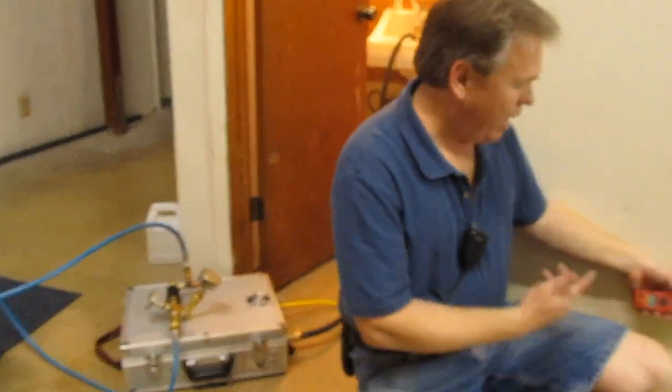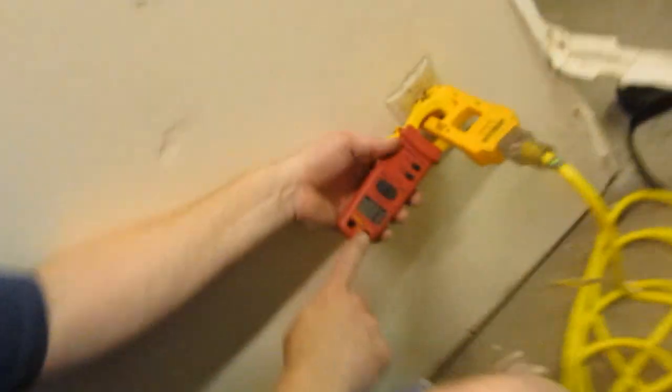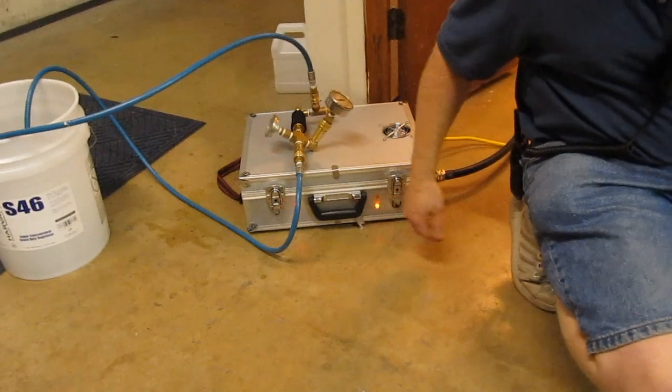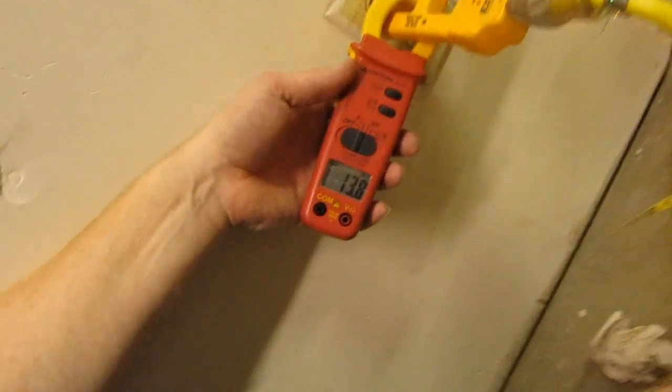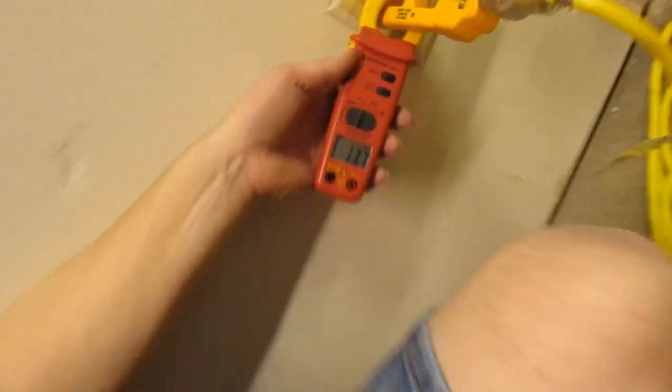I did also want to show you the amp draw that the unit device pulls. First of all, we'll just turn on the pump. And the pump running by itself, it's pulling between 1.1 and 1.2 amps. I turn that off, and I turn the heater on. And the heater's pulling 13.7 amps, and I'll turn both of them on.